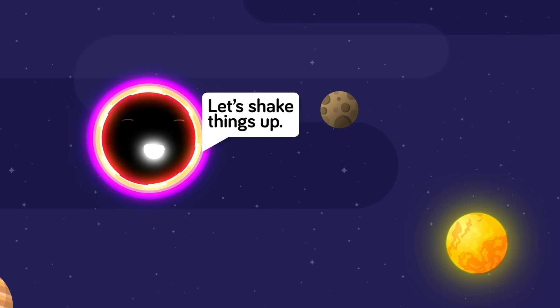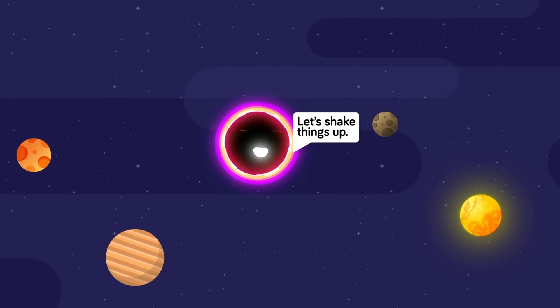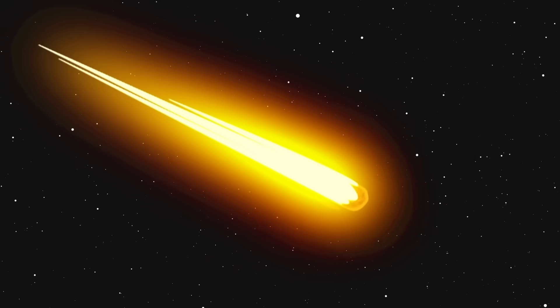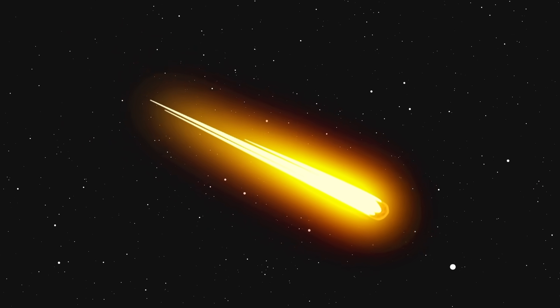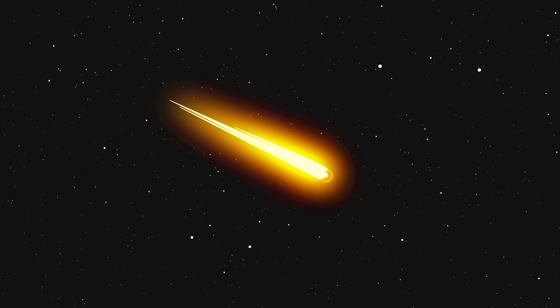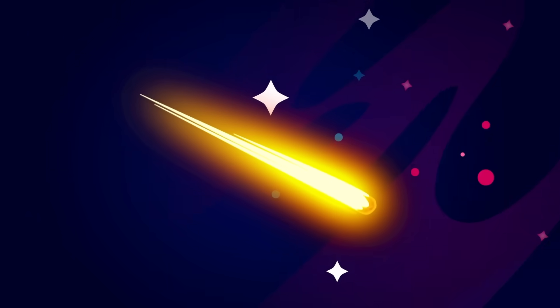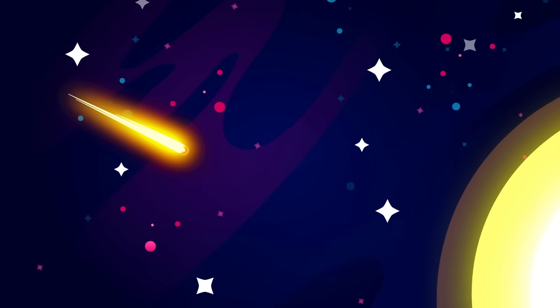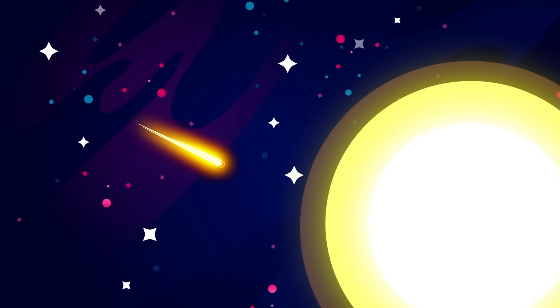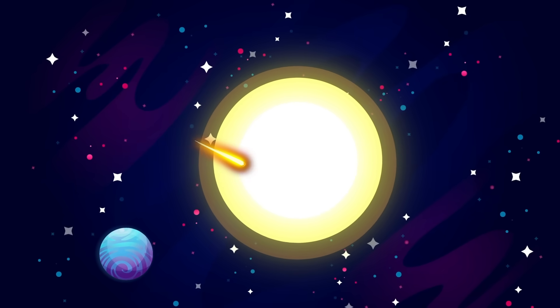This is how comets come to be—distant, icy bodies that eventually succumb to the relentless pull of gravity in the solar system. Over time, their orbits shift, drawing them inward, sometimes plunging them deep into the inner solar system or even grazing the sun's outer layers.